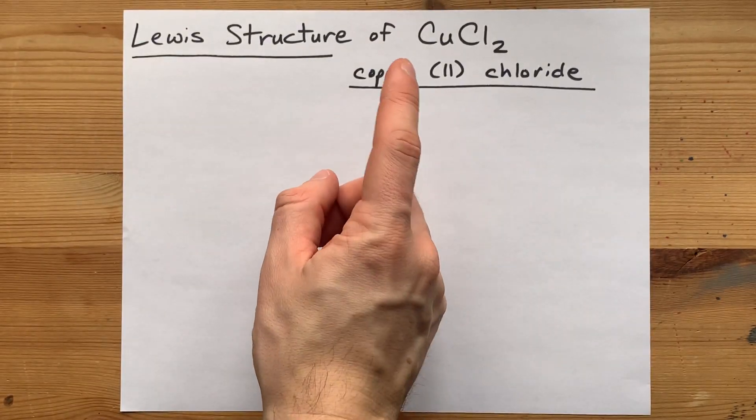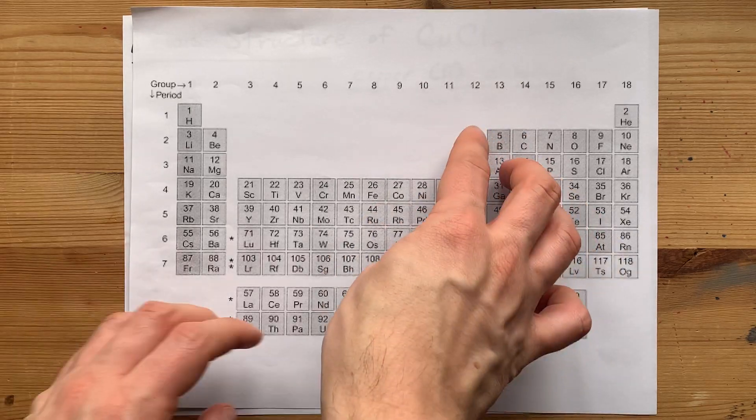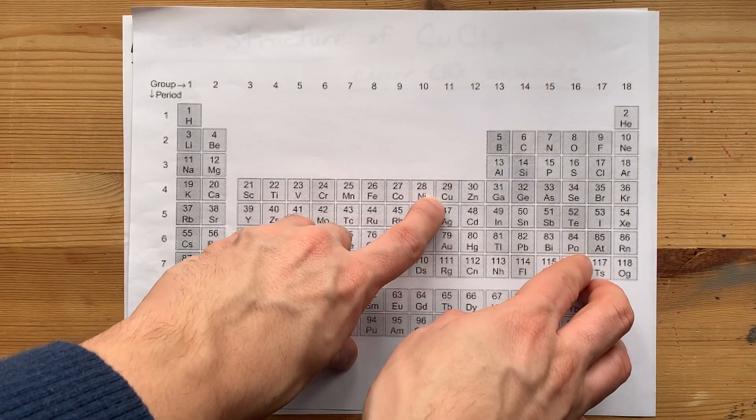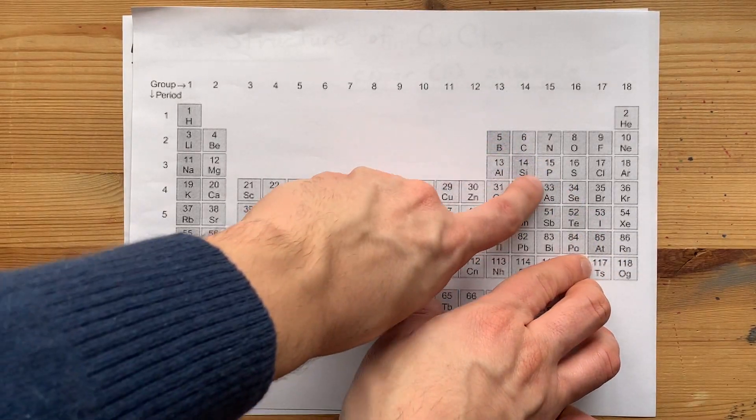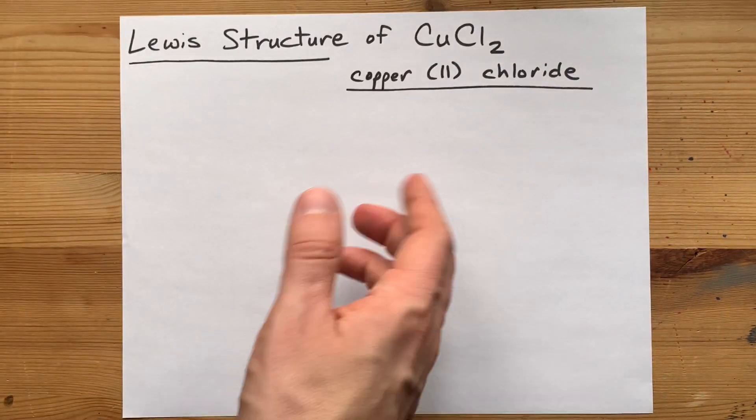Let's draw the Lewis structure for copper(II) chloride. Copper comes from the left-hand side of the staircase. It is a metal. Chlorine is from the right-hand side of the staircase. It's a non-metal.